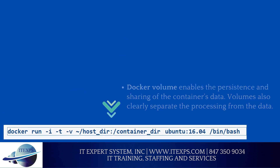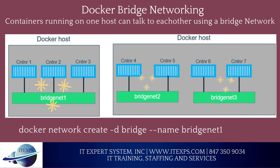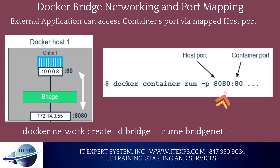Now let's find out how one container talks with other containers. Containers running on one host can talk to each other using a bridge network. We can create one or more bridge networks to provide network isolation. External applications can access a container's port via a mapped host port.